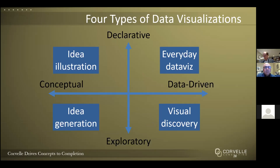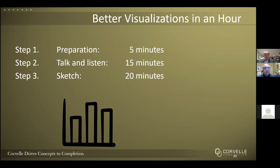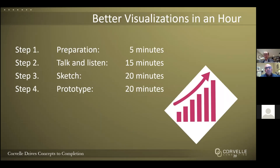Often we end up in the top right quadrant — everyday data visualization. There's nothing wrong with that, but use this process to confirm that's where you really want to be. Having chosen the quadrant, we're now ready for better visualizations in an hour — four steps. First, preparation. Second, talk and listen for 15 minutes and collaborate with a colleague. Third, sketch — draw your ideas on a flip chart or whiteboard. Fourth, prototype the visualization in more detail. We want to fight the impulse to immediately select data and choose a chart type from preset software options.